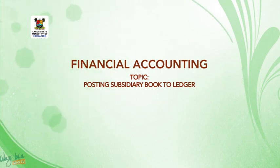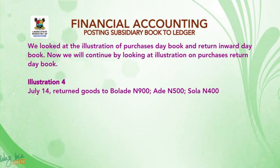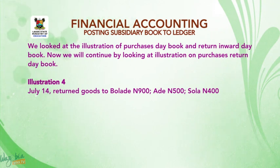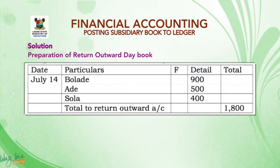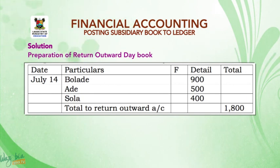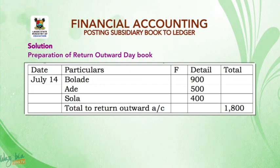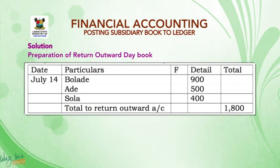Welcome back. In the last segment we described the return inward and return outward day books and looked at illustrations. Now we'll continue with the illustration on the purchase return outward day book. Illustration four: July 14, returned goods to Bolade 900 naira, Ade 500 naira, Shola 400 naira. Solution — preparation of return outward day book: five table columns of date, particulars, folio, detail, total. July 14: Bolade 900; Ade 500; Shola 400; total to return outward account 1,800.